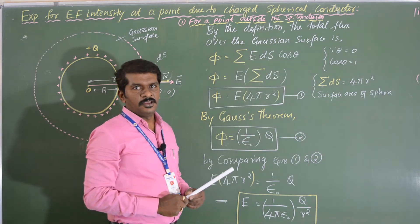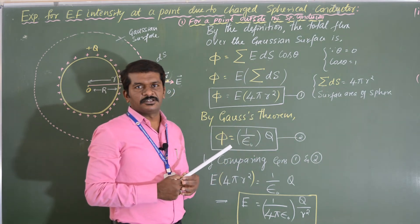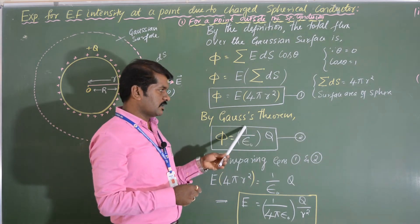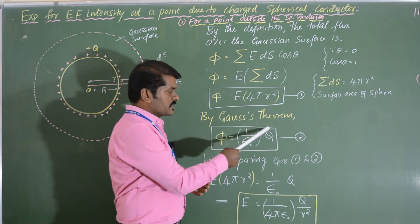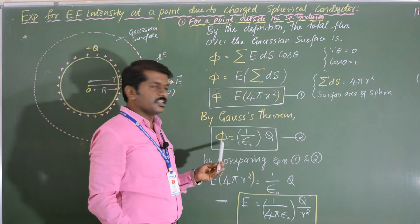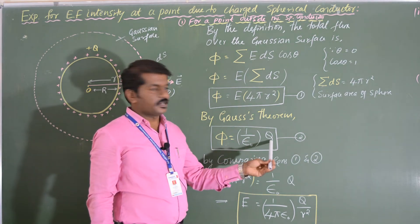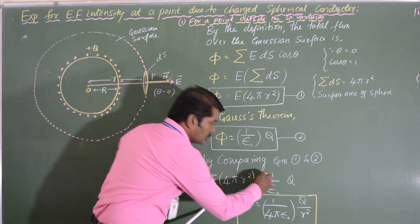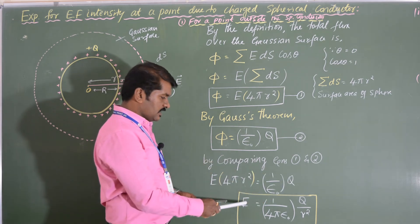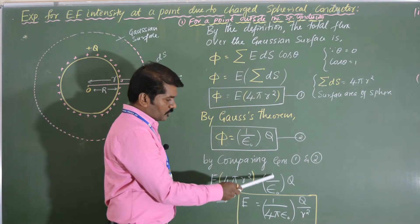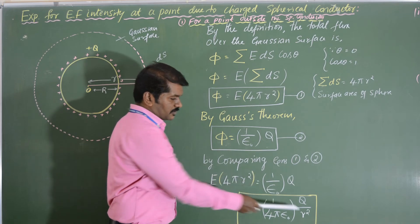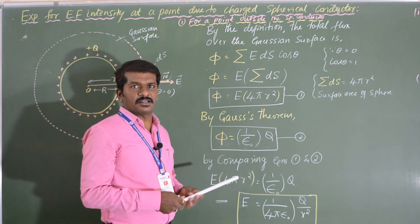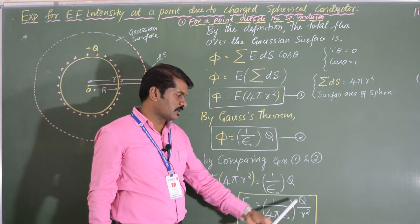By Gauss theorem, phi equals Q by epsilon naught — equation 2. Comparing equations 1 and 2: E into 4πR² equals Q by epsilon naught. Rearranging, E equals 1 by 4π epsilon naught times Q by R². This is the expression for electric field intensity at a point outside the charged spherical conductor.